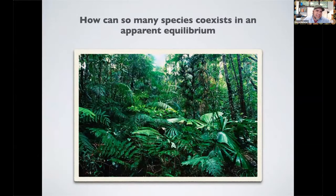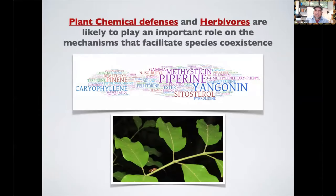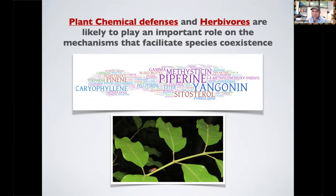This is a core question that fuels everything I've done: how can so many species coexist in this apparent equilibrium when you go to the forest and see them all there? In recent years we've learned that plant chemical defenses and herbivores are likely to play an important role. Plant chemistry and the way it modulates plant-herbivore interactions might be an important component of mechanisms that facilitate species coexistence.